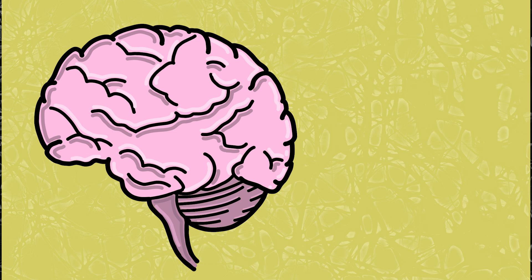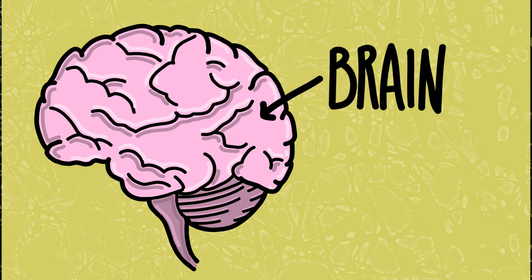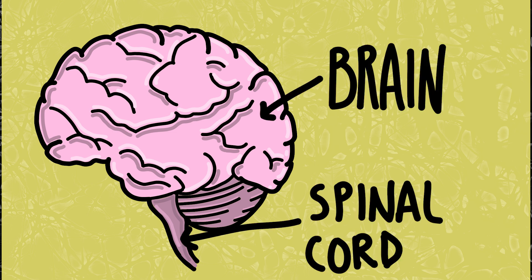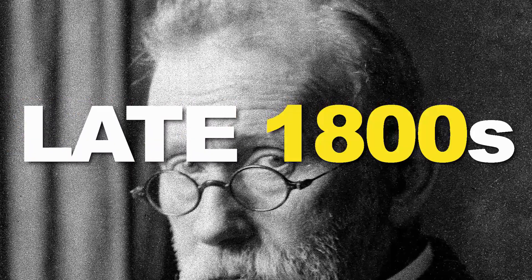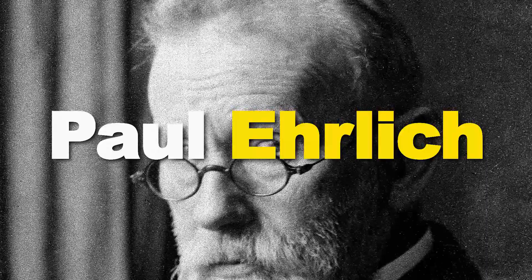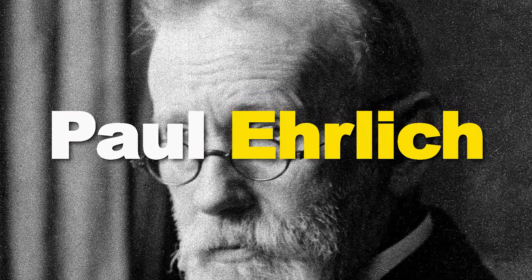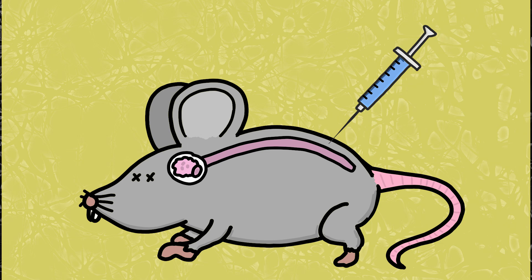The idea of a barrier between your blood and your central nervous system, your brain and your spinal cord, didn't really get started until the late 1800s when a German scientist, Paul Ehrlich, was doing some staining. Ehrlich noticed that the central nervous system came out its natural color while everything else was stained blue.